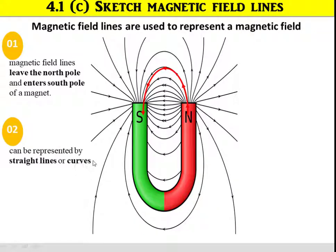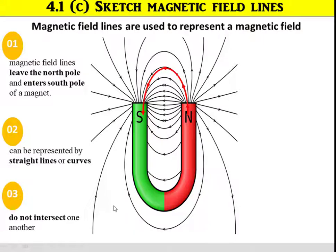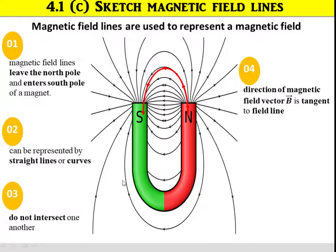Secondly, magnetic field lines can be represented by a straight line or curve. Third, they do not intersect one another — make sure you do not overlap the lines. Fourth, in the direction of the magnetic field lines, vector B is tangent to the field lines.